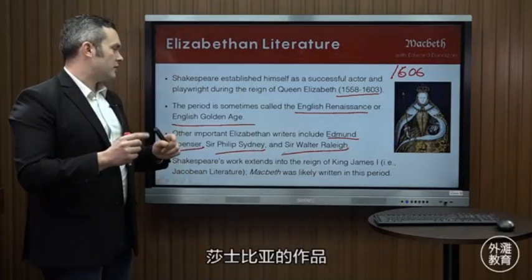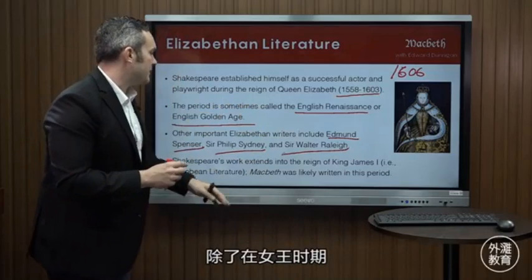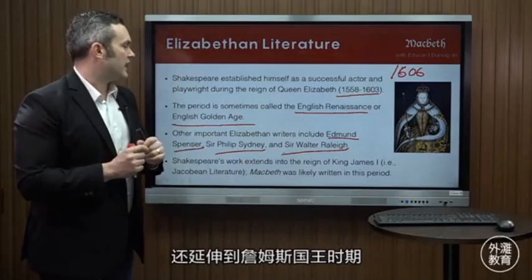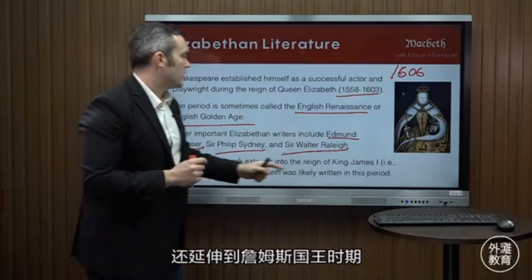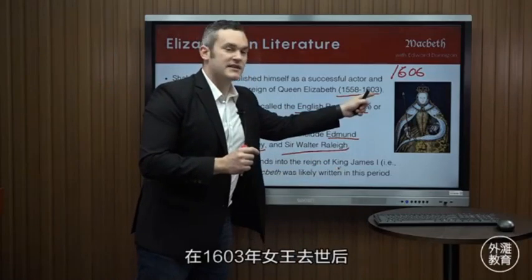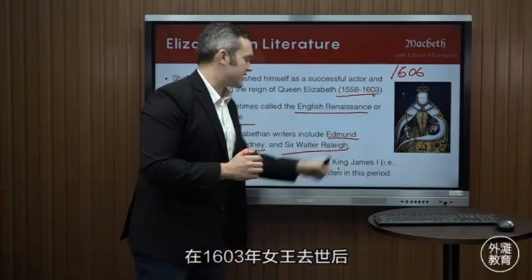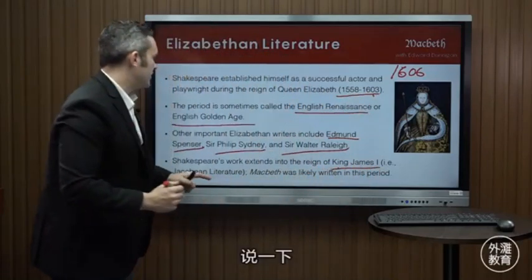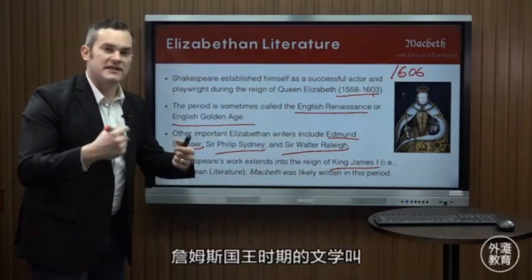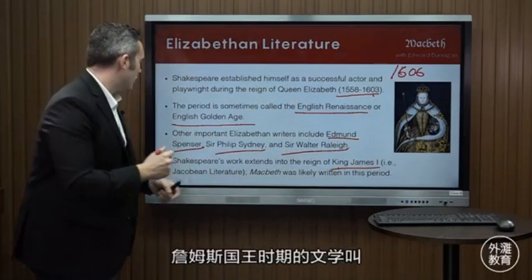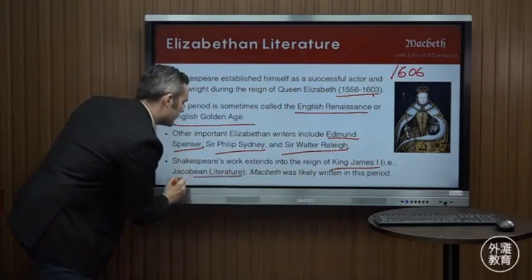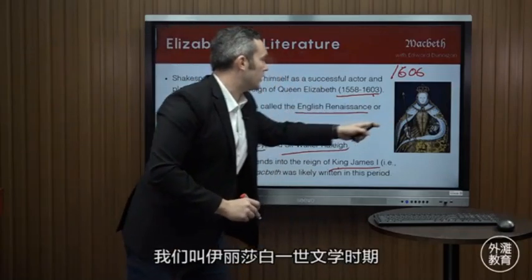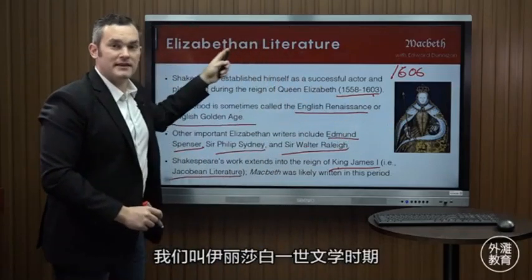Shakespeare's work, in addition to being in the Elizabethan period, extends into the reign of King James, who became King of England in 1603 when Elizabeth died. King James's literature is called Jacobean literature, whereas Queen Elizabeth's period we called Elizabethan literature.